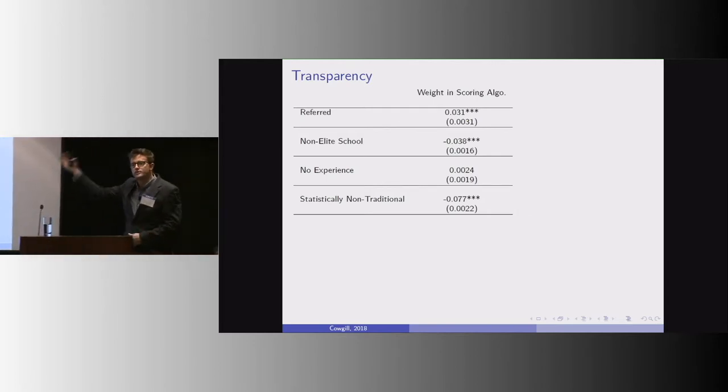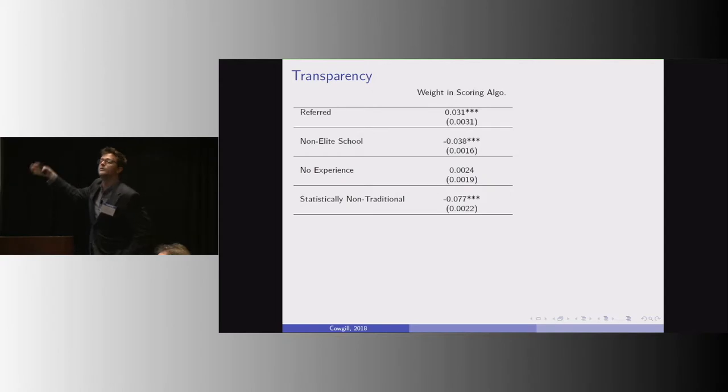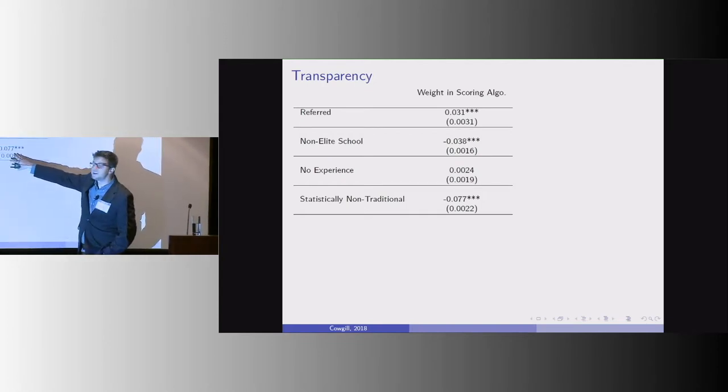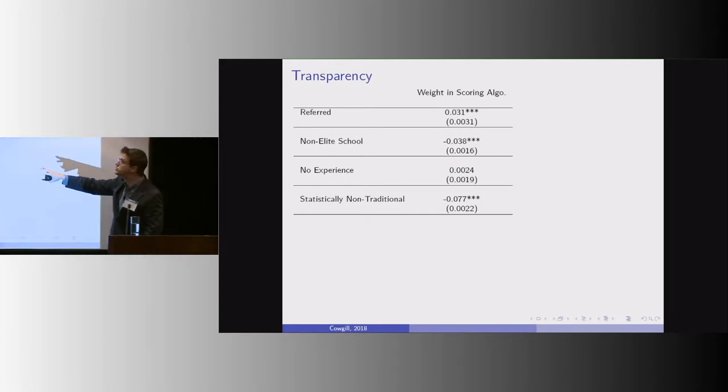So this is actual data from a paper I have on resume screening and machine learning. And it would look to a naive observer like statistically non-traditional people are hugely screwed.